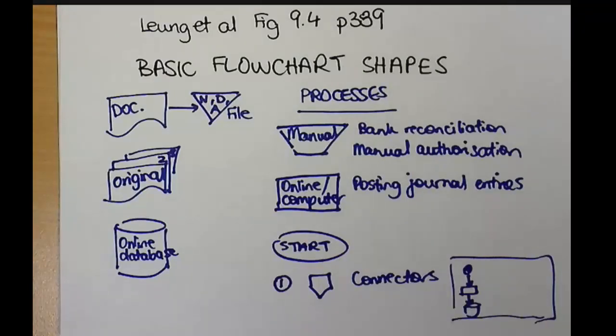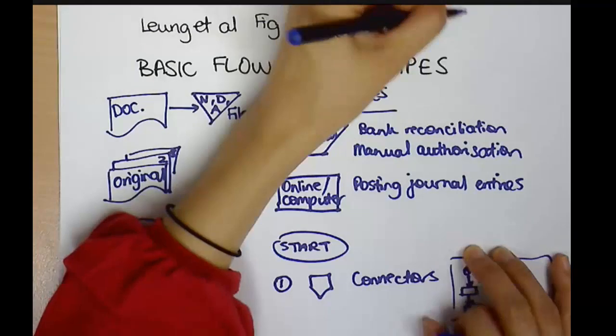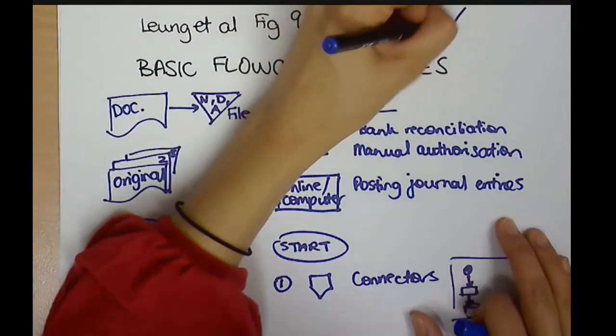I did forget one other shape earlier. But the last shape I want to talk about is the decision process. Alright. So sometimes we'll have a decision to make, a choice. And when we're doing that, we'll use the diamond.